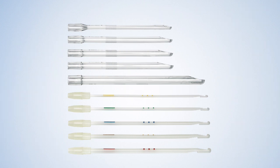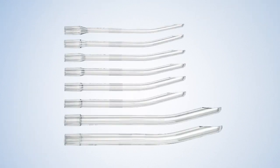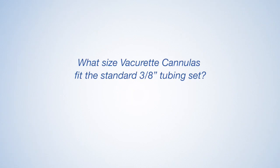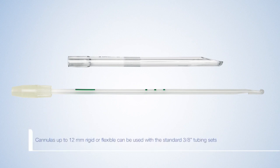The rigid cannulas are available in either straight or curved styles from 7 to 16 millimeters, and the flexible are available in sizes 4 to 8 millimeters with or without collection sets. What size vacuoret cannulas fit the standard 3-8 inch tubing set? Cannulas up to 12 millimeters, rigid or flexible, can be used with the standard 3-8 inch tubing sets.